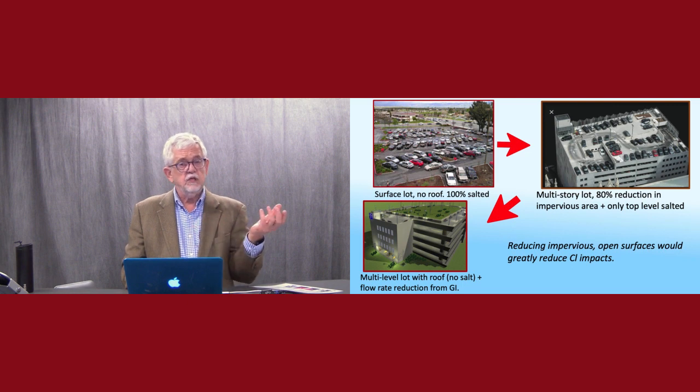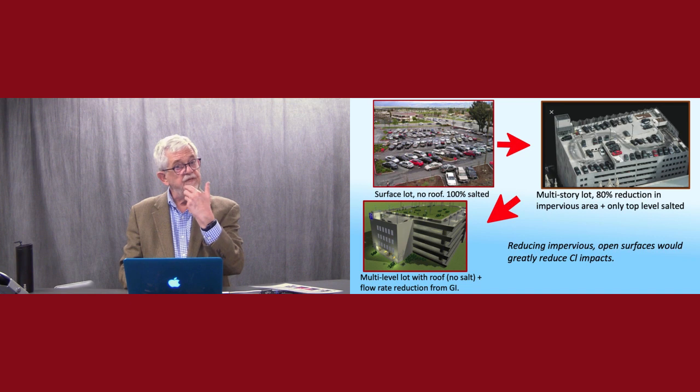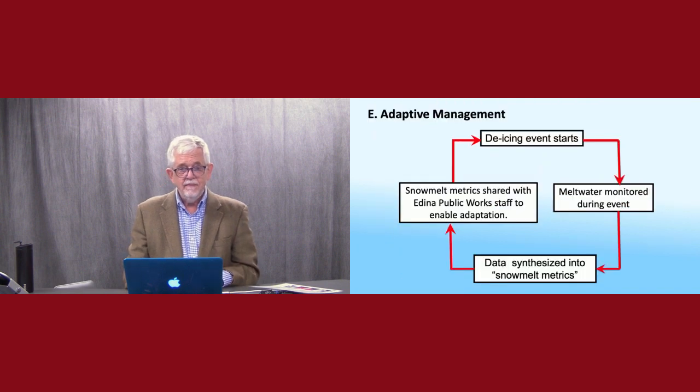There's all kinds of examples that we could have that would give you less salted impervious surface and lead to improved chloride results, effects on your streams and your groundwater. And this is another example of source reduction. We're reducing the source rather than trying to take it off. And it's very hard to remove chloride. Once you drop it out the back of a truck, it's very hard to get back.